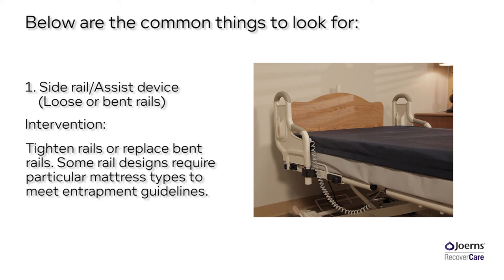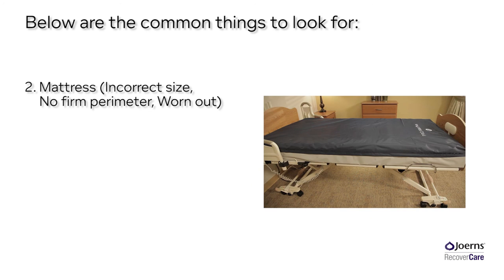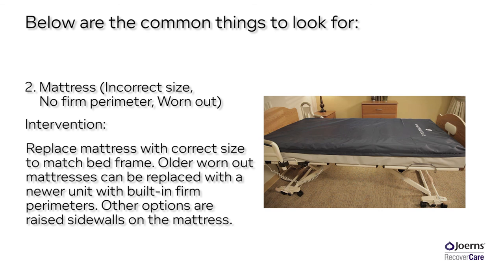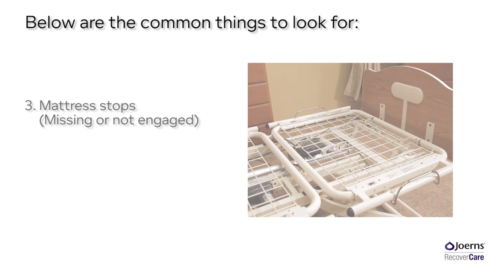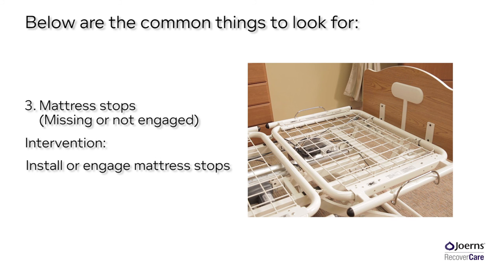Some rail designs require particular mattress types to meet entrapment guidelines. Intervention 2: Mattress — incorrect size, no firm perimeter, or worn out. Intervention: replace the mattress with the correct size to match the bed frame. Older worn out mattresses can be replaced with a newer unit with built-in firm perimeters. Other options are raised side walls on the mattress. Intervention 3: Mattress stops — missing or not engaged. Intervention: install or engage mattress stops.